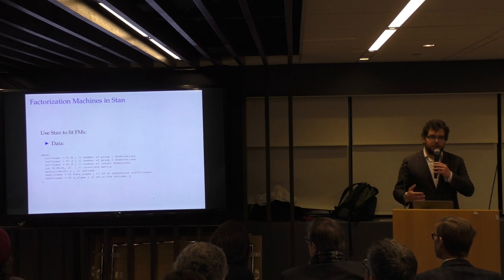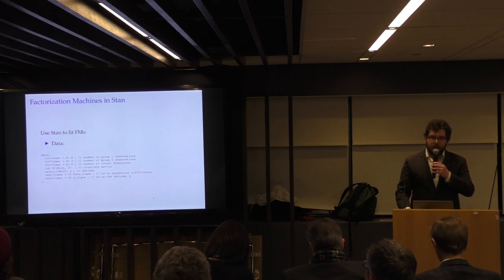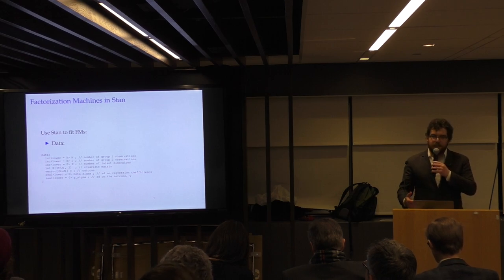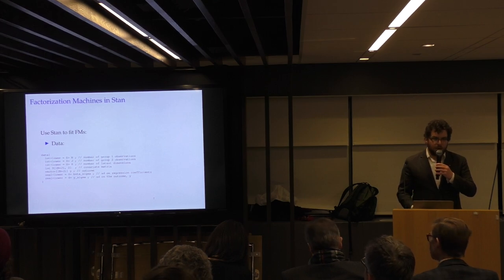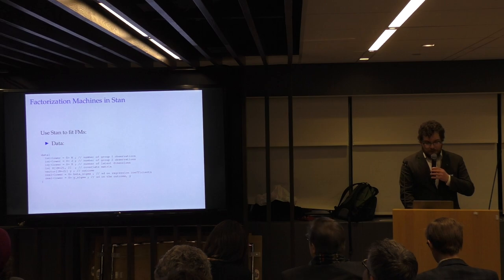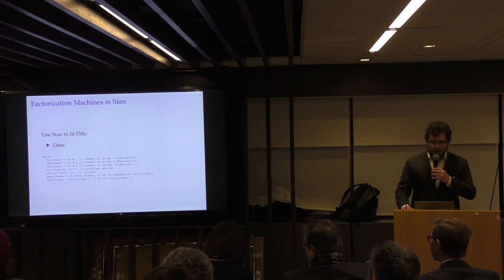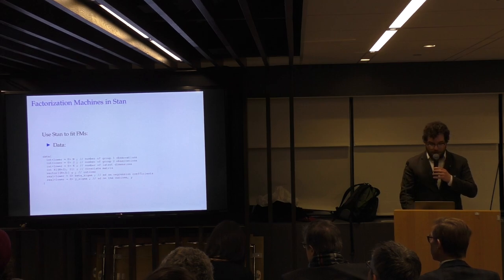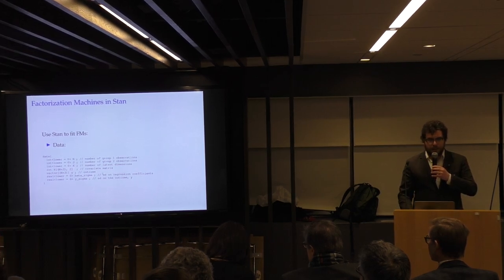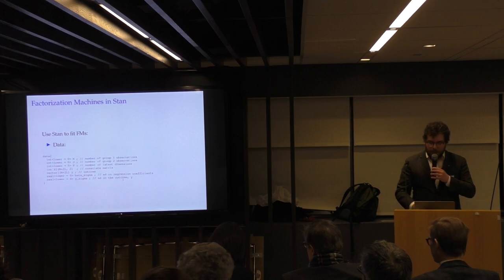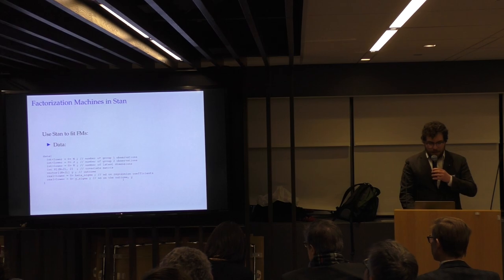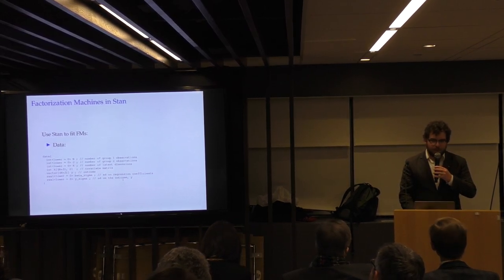So a Stan model has basically three blocks in the code. The data block, the parameters block, and the model block. So data is what you're giving it. There are things that aren't estimated. They're either data or values you're providing. And so you have to declare types in Stan. So what we'll do is we have our number of group 1, group 2 observations, and our number of latent dimensions. We have our covariate matrix, which is the n times j by 2. And so this is just the set of indices for our fact, for our terms. And then we have our outcome variable here. And then in this case, what I'm doing is I'm simply providing the standard deviations on the regression coefficients and the outcome. In a real world situation, you'd probably want to model these. But I thought I'd keep it simple for this. And so much like before, this code has been cut up for presentation purposes, but the complete script is available online.